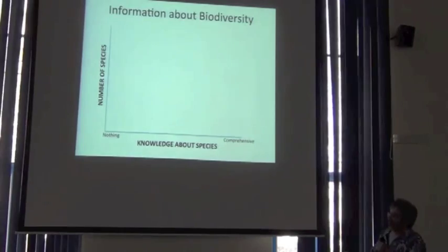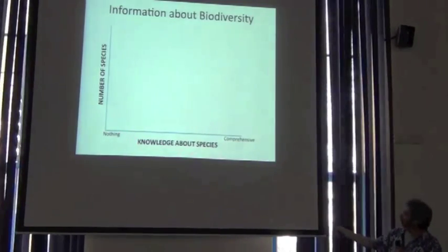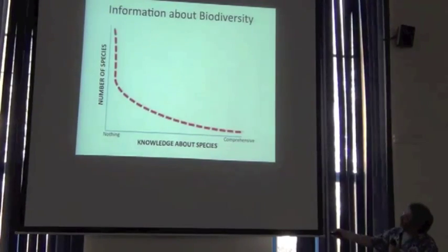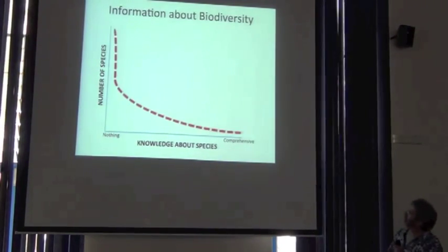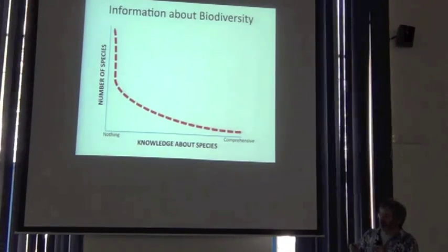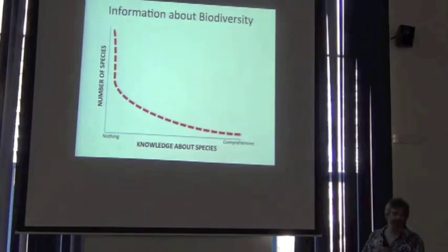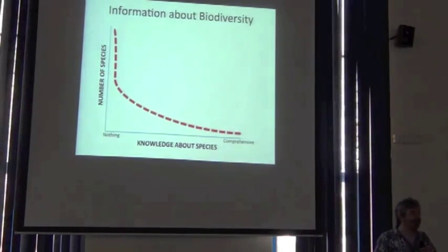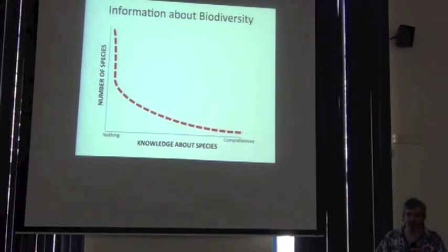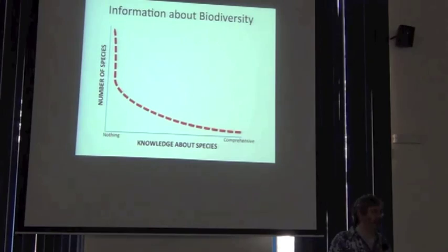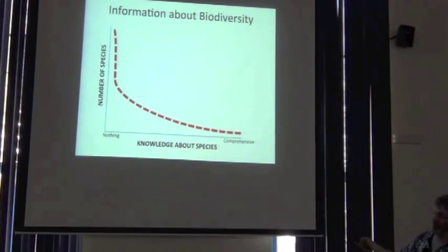I want you to think about biodiversity in a two-dimensional space. One dimension is how much we know about a species — from nothing to very comprehensively. The other dimension is how many species are represented at that level of knowledge. The shape of this relationship is a very negative curve, which is to say for very, very few species do we know a lot. We're talking about Drosophila, for example, where we know its genome, its protein structure, epigenetics, its distribution, its physiology. Most species are very poorly known.